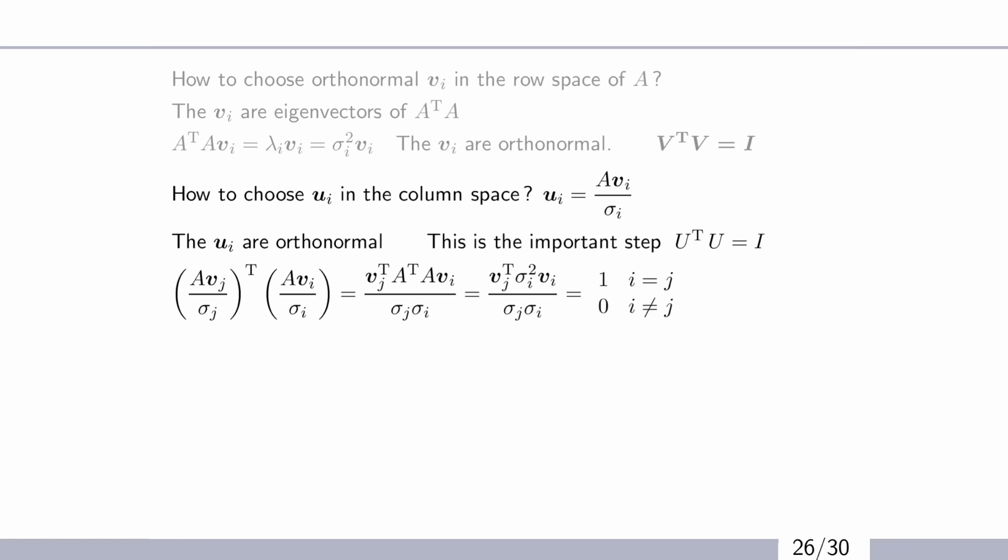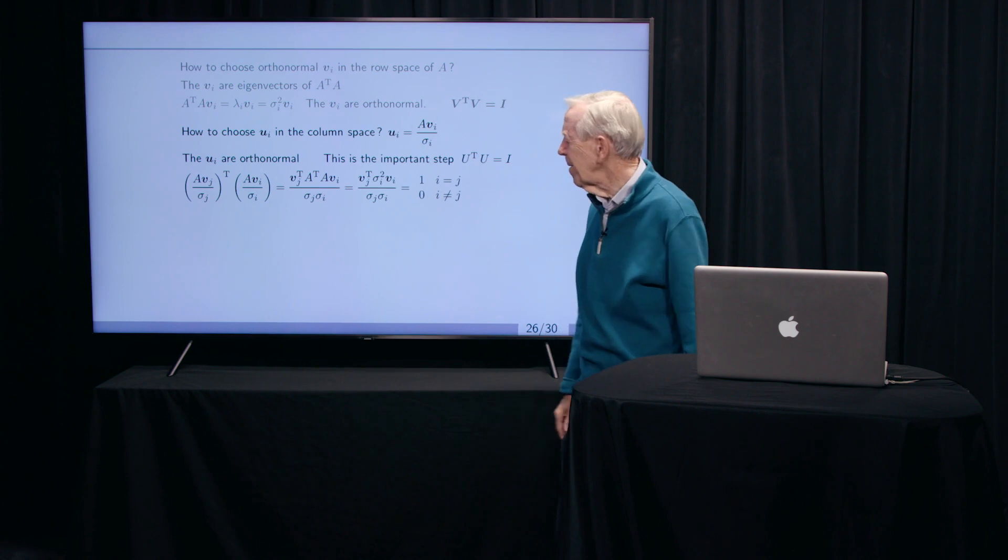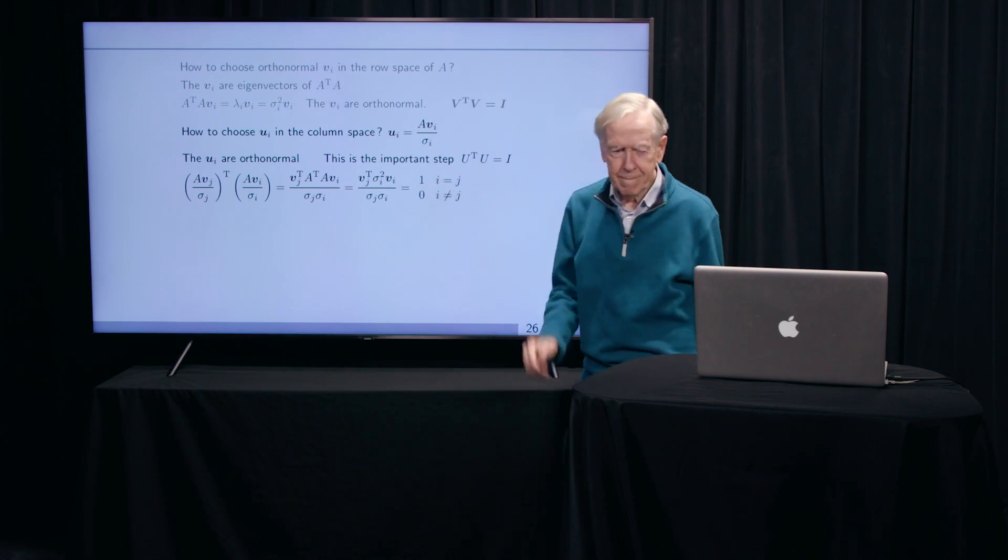Well, and divide by sigmas, because these vectors, U's and V's, are unit vectors, length one. So we have to scale them properly. And this was a little key bit of algebra to check that not only the V's were orthogonal, but the U's are orthogonal. Yeah, it just comes out, comes out.